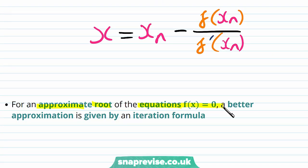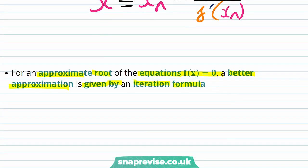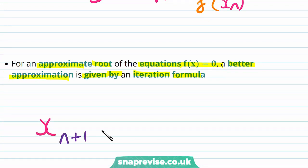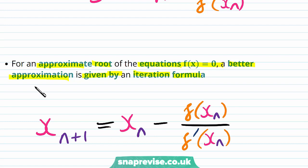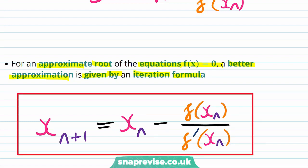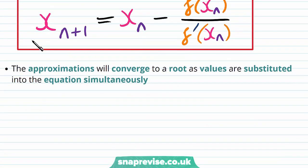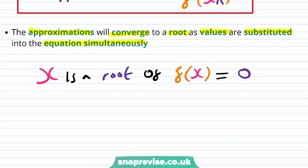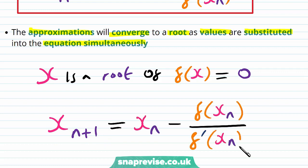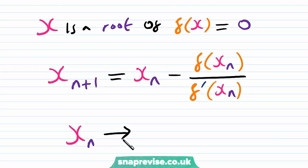For an approximate root of the equation f(x) equals zero, a better approximation is given by an iteration formula. We set our x equal to xn+1, and so this is equal to xn minus f(xn) over f'(xn). This gives us an iterative formula for xn+1. The approximations will converge to a root as the values are substituted into the equation. Suppose that x* is a root of f(x) equals zero. Then our iterative formula will mean that in general xn tends to the root x*, as long as our starting value is given as an approximation to the root, i.e. is quite close to the root.